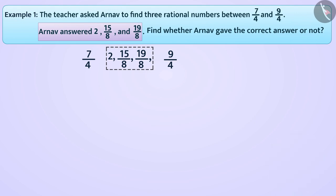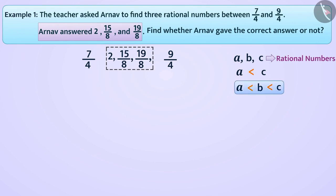If A, B, C are rational numbers where A is less than C, then B is a rational number between these two only when A is less than B is less than C — that is, B is greater than A but smaller than C. Here, 7 by 4 is less than 9 by 4.